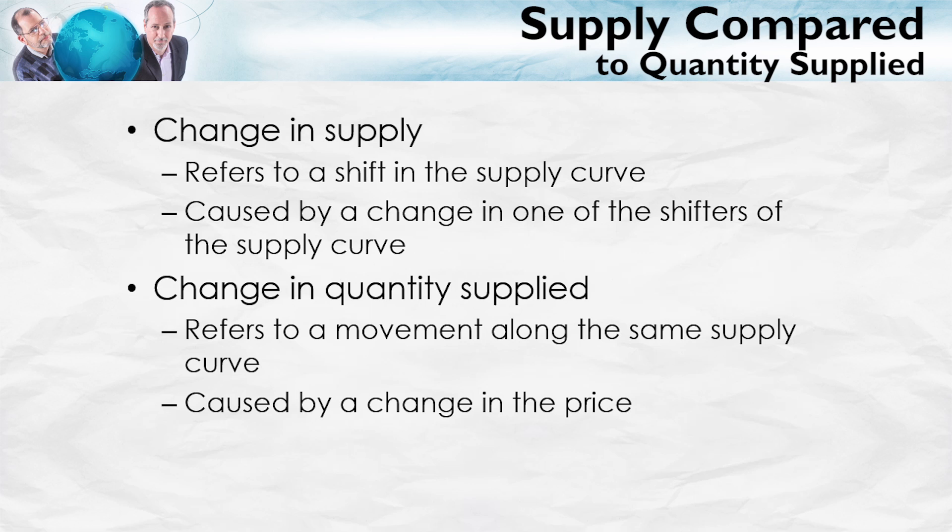Okay, let's go to the model. On the left, we begin with a change in supply. In this case, an increase in supply that shifts the entire supply curve down and to the right, thereby generating a lower price and greater quantity bought and sold.